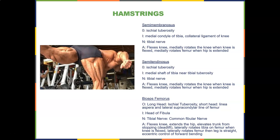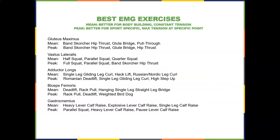Don't drop the weights — eccentric control, slow it down. That's how you get half the exercise, if not more. If you want hypertrophy, slow down the eccentric phase.